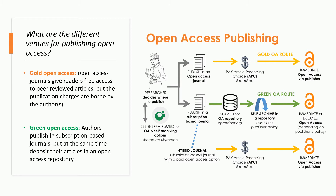Green open access: under green open access, authors publish in subscription-based journals, but at the same time deposit their articles in an open access repository. This is known as self-archiving. Thus, although the journal is behind a paywall, readers have free access to the article through the repository. Authors who cannot pay the fees for publishing in open access journals often take this route. However, articles may not be peer-reviewed prior to posting in a repository. Another point to keep in mind is that not all subscription-based journals allow authors to post their paper on a repository.